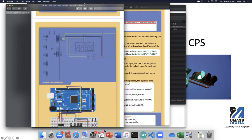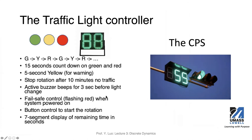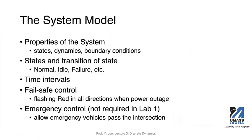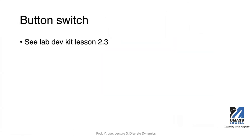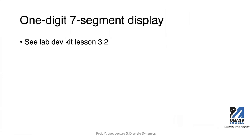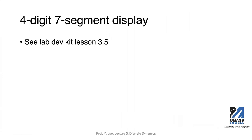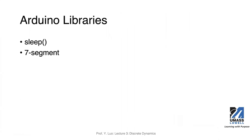It's 9:10 now. I'll wrap up here — the next few slides cover the hardware button, switch, and LED, which you should read more about in the resource folder. I will talk in more detail about the seven-segment display and shift registers next week. Do you have any questions before you go? Thank you.